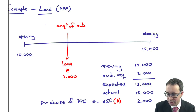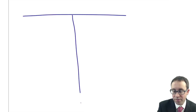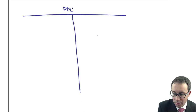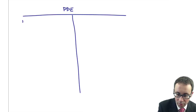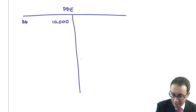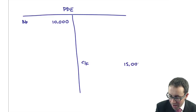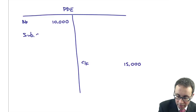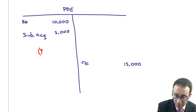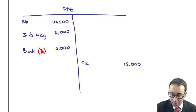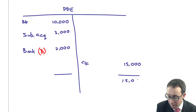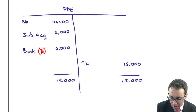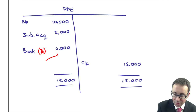If you draw it up as a T account for property, plant and equipment: the opening figure is 10,000, the closing figure is 15,000, the acquisition of a subsidiary during the year was 3,000 consolidated in, and the balancing figure is 2,000. That must be where we've credited the bank and debited property, plant and equipment — meaning we've purchased it, and that must be an outflow. T accounts are much easier to understand for things like PPE and tax payables.